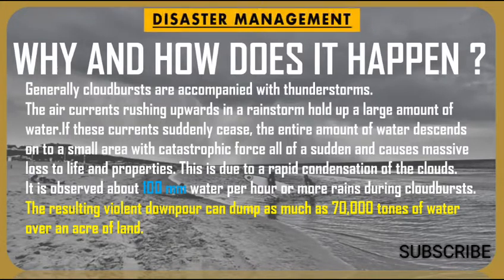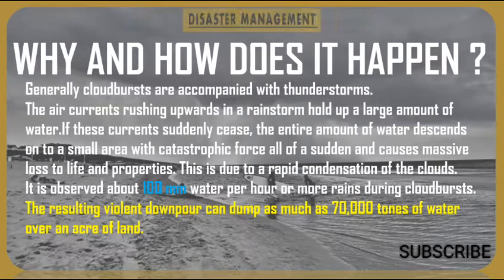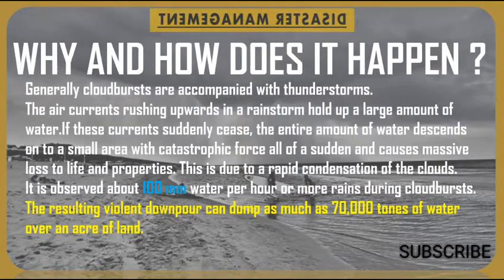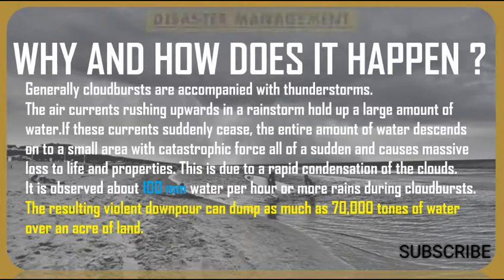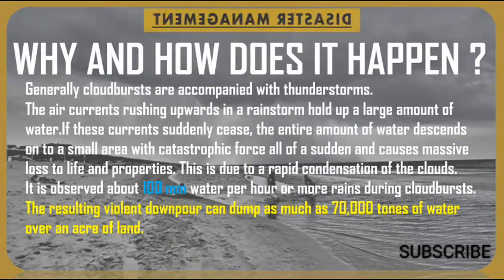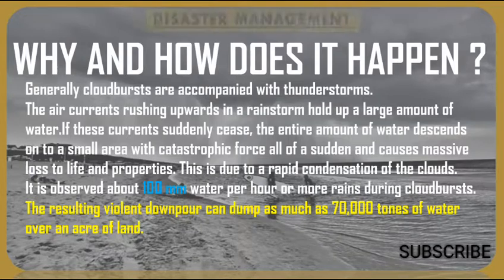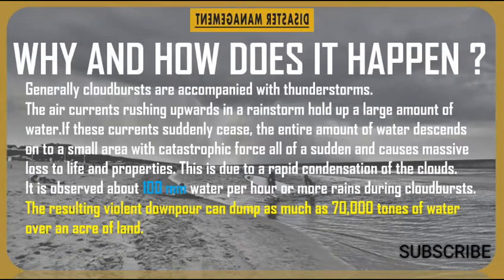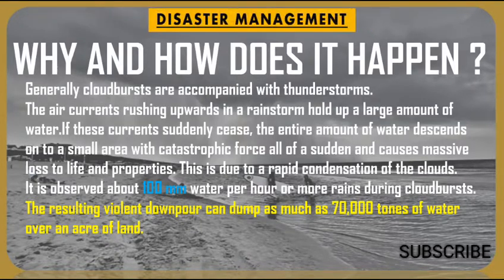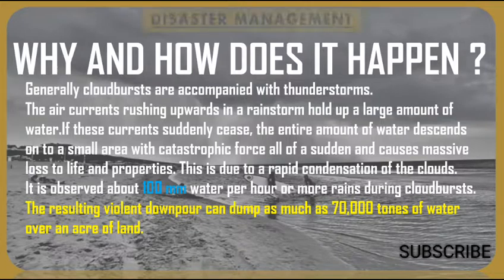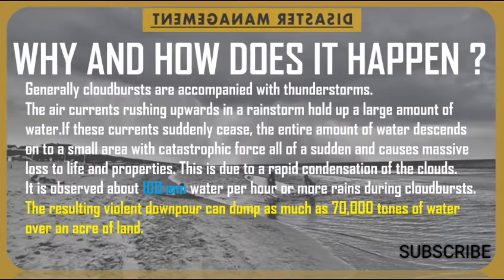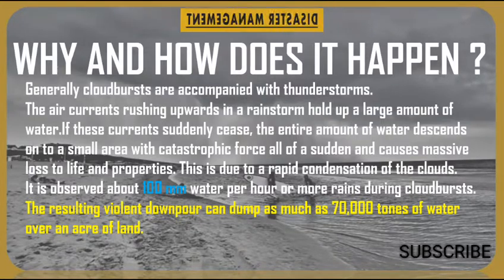This results in massive loss of life and property, due to rapid condensation of the clouds. It is observed that 100 millimeters of water per hour or more falls during a cloudburst. The resulting violent downpour can dump as much as 70,000 tons of water over an acre of land.